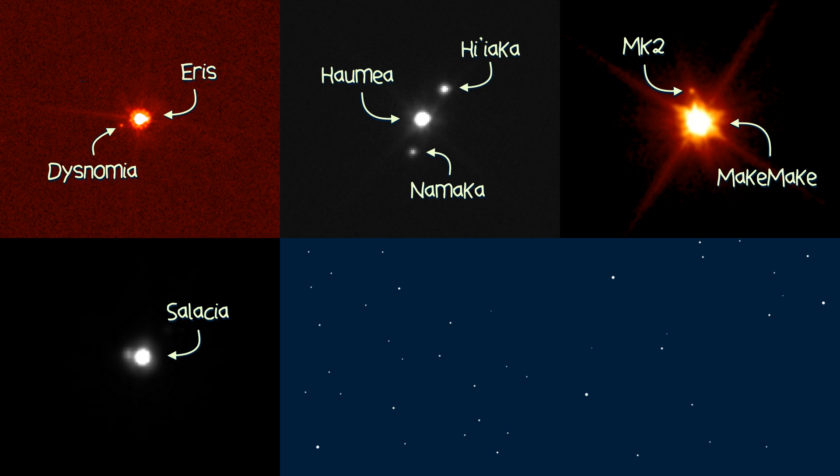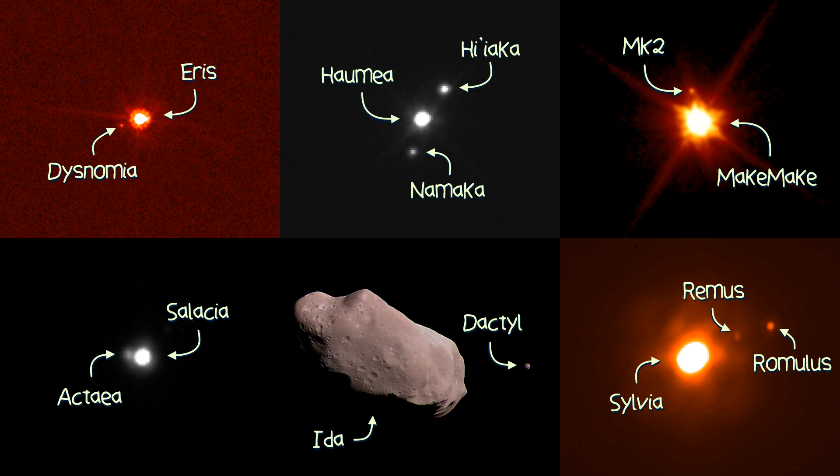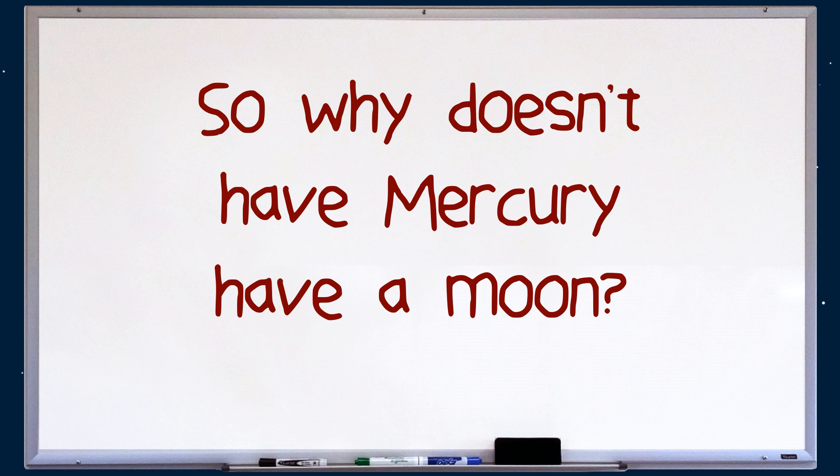Mercury is distinctly moonless, even though dozens of much smaller bodies in our solar system possess at least one moon in their orbit. So why doesn't Mercury have a moon?